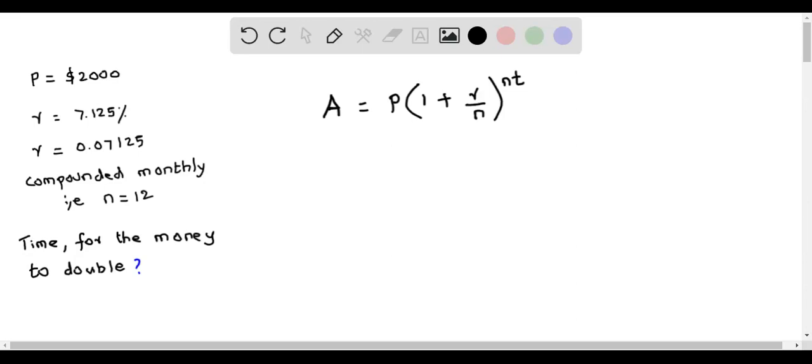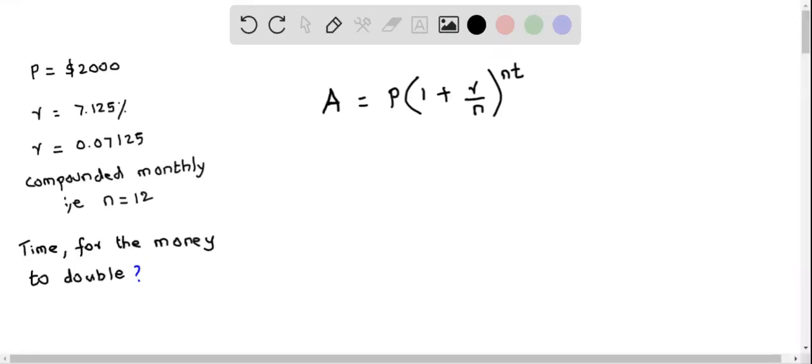Let's calculate the time for money to double when an investment of $2,000 is invested at a rate of r = 7.125% compounded monthly, that is when n = 12.